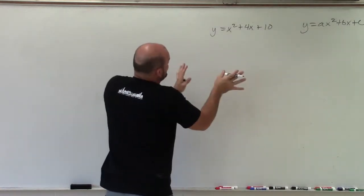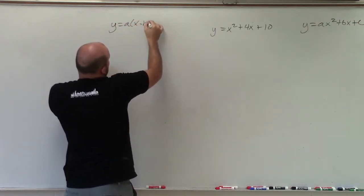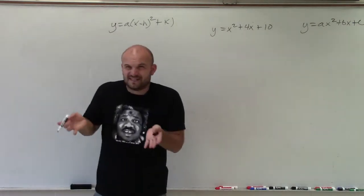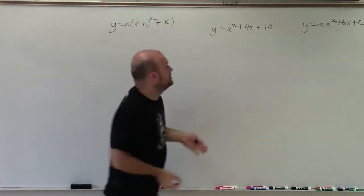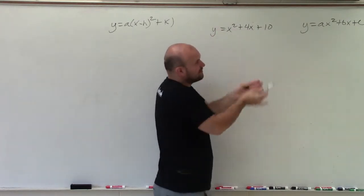So the first thing we want to do is understand what vertex form looks like. Vertex form looks like this: a times (x minus h) squared plus k. We need to find these h's and k's and have a binomial squared. To produce a binomial squared, we need to produce a perfect square.